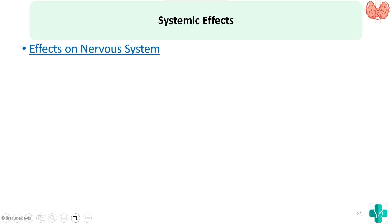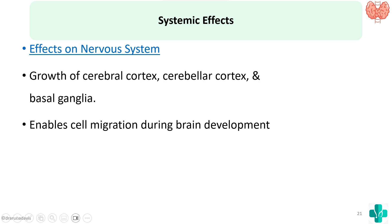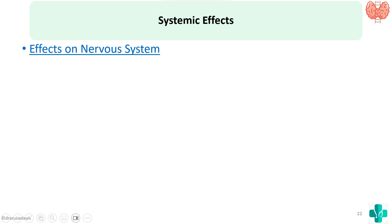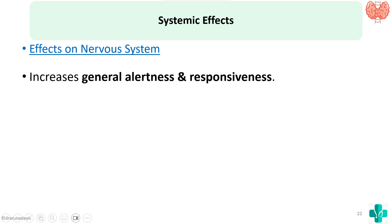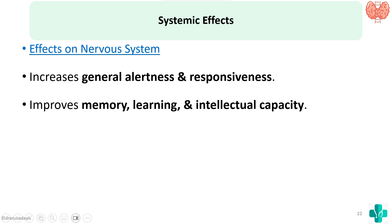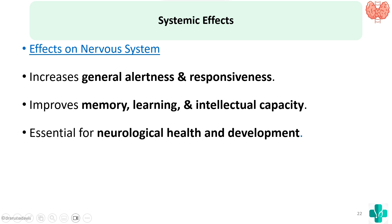Thyroid hormone also helps in the growth of the cerebral cortex, cerebellar cortex, and basal ganglia, and enables cell migration during brain development. That is why when the mother is hypothyroid, the baby has mental retardation, as proper growth of the cerebral cortex, cerebellar cortex, and basal ganglia requires thyroid. It also increases general alertness and responsiveness, improves memory, learning, and intellectual capacity, and is essential for neurological health and development.